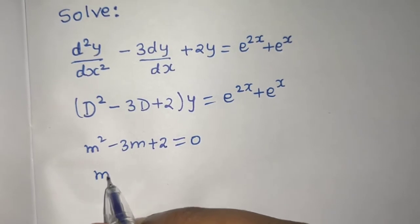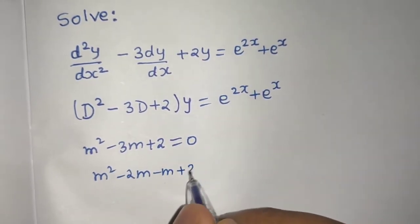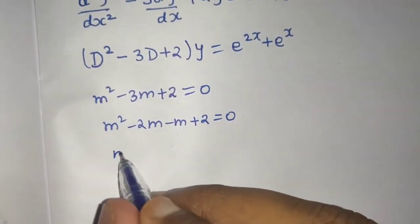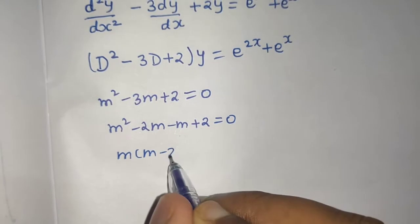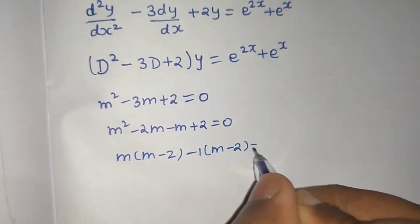Solve this. So m² minus 2m minus m plus 2 equals 0. m(m minus 2) minus 1(m minus 2) equals 0.